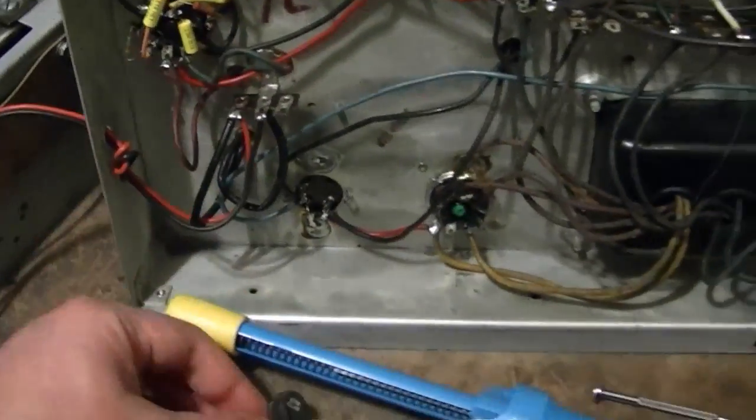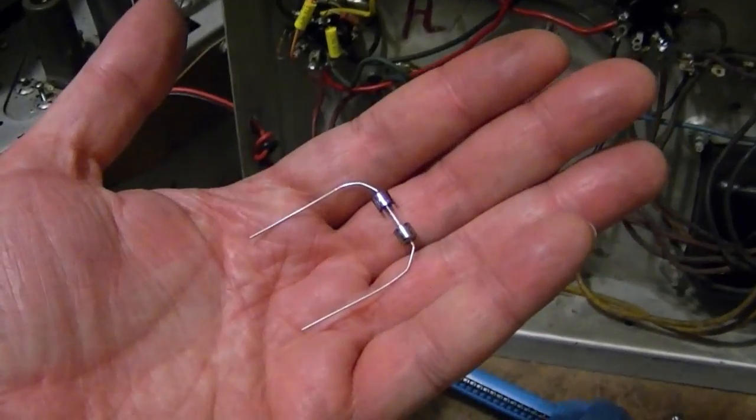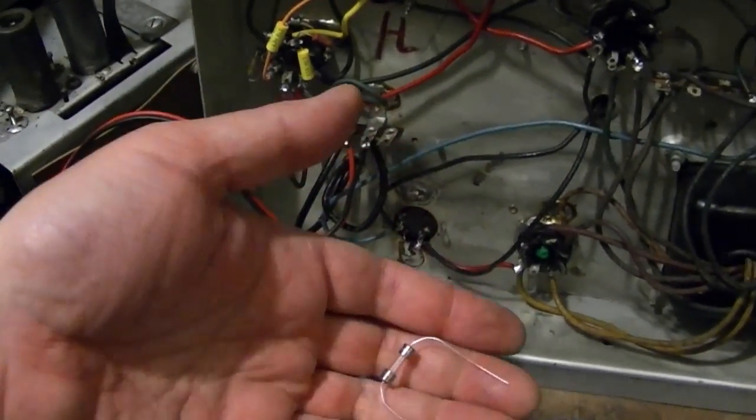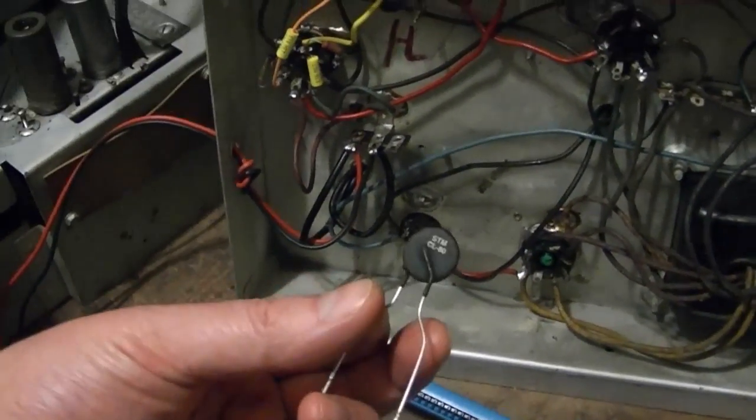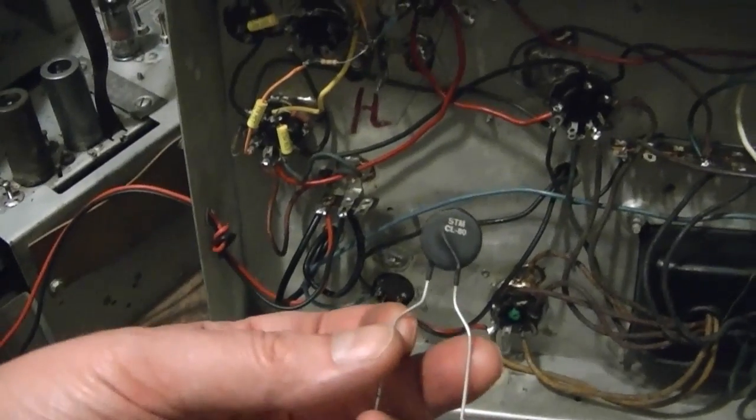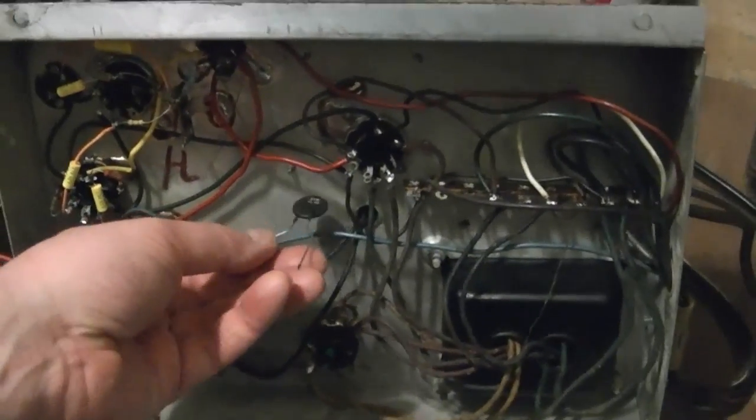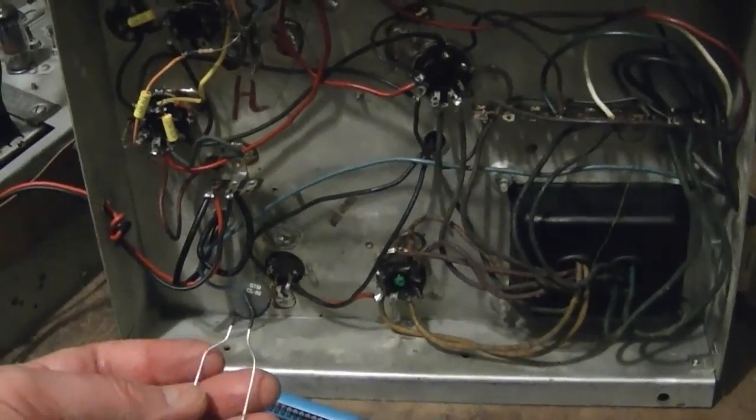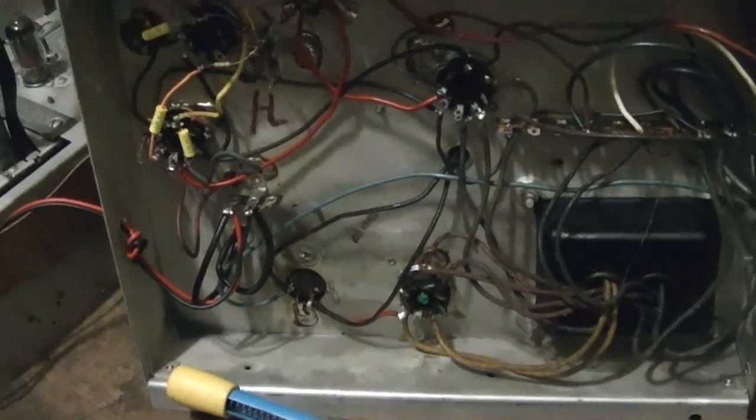Otherwise, I could use a slow blow fuse, but I don't have any in hand, so I'll use a regular 3-amp fuse and a thermistor CL80 good for 3 amps. This set draws about 1.25 amps steady state, so that should look just fine.